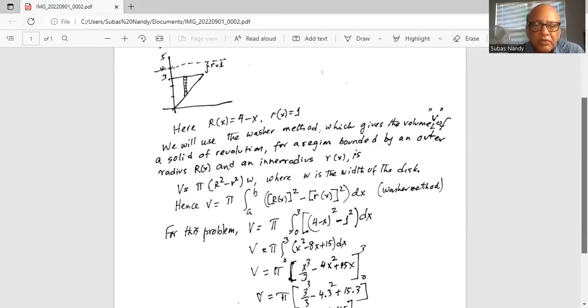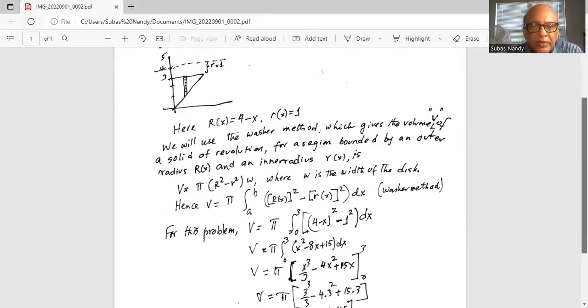For this problem volume V is equal to pi, a is 0 and the highest b upper limit of integration is 3, and inside we have capital R(x) is 4 minus x square minus small r(x) square is 1 square dx.